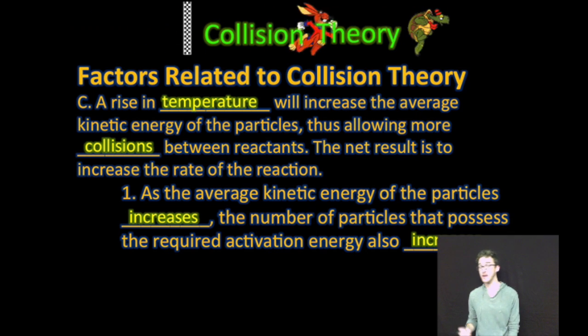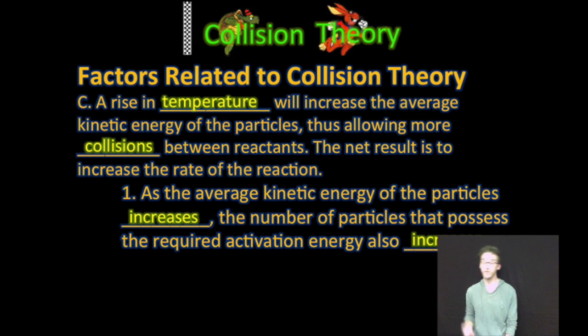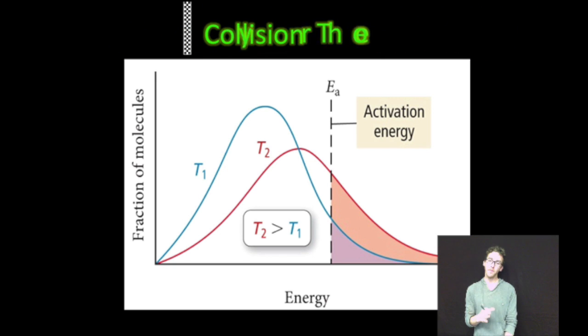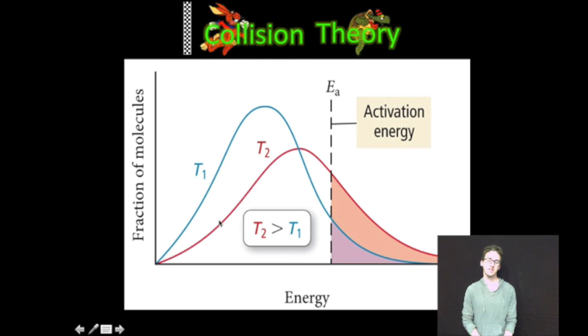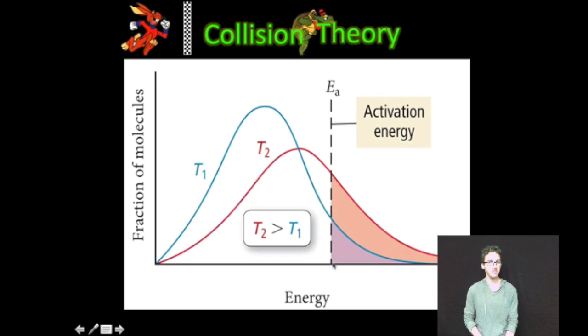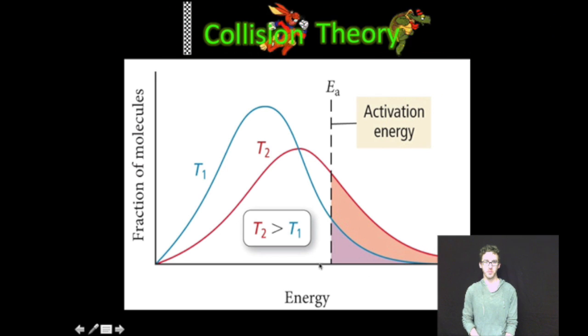As you increase the temperature, as you increase the average kinetic energy of the particles, of your reactant particles, the number of reactant particles that possess the required activation energy also increases. Take a look at this thriller of a graph to help illustrate how increasing the temperature increases the number of particles with the activation energy. T1 represents our colder temperature. T2 represents our hotter temperature. This dashed line represents the activation energy. Notice that at colder temperatures, far fewer molecules, far fewer particles have the required activation energy to form products. But by increasing the temperature, we increase the number of particles that meet that minimum activation energy barrier.